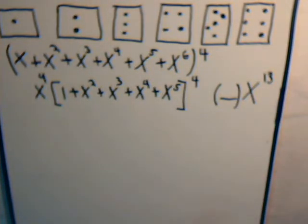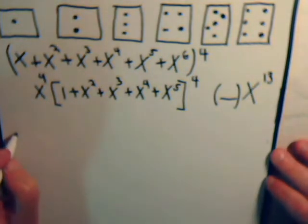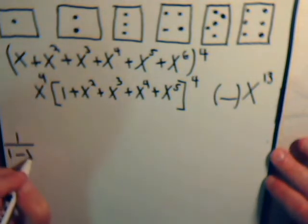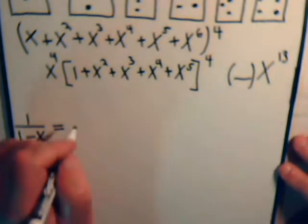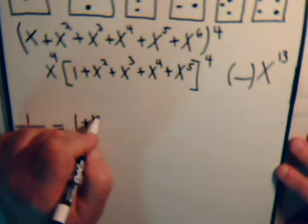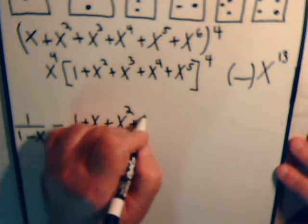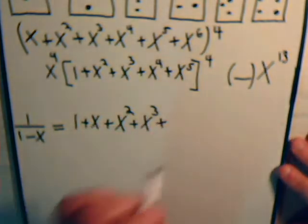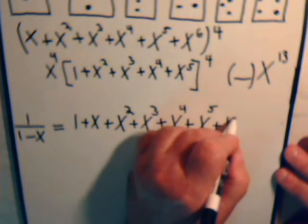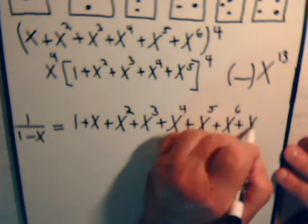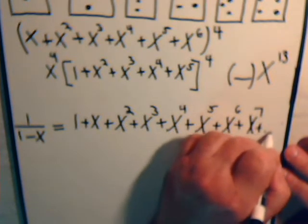We could multiply this together four times, but for very large exponents that's not realistic. So we recall that 1 over (1 minus x) equals an infinite series: 1 + x + x² + x³, and so on, going all the way out to infinity.